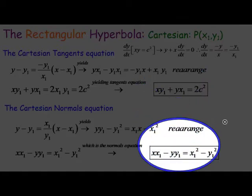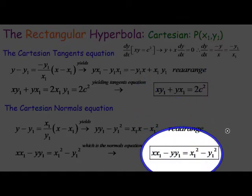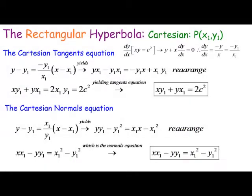And the Cartesian normal equation for xy equals c squared is derived using the negative reciprocal gradient, subbed into y minus y₁ equals m(x minus x₁), then rearranged and simplified.